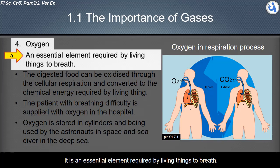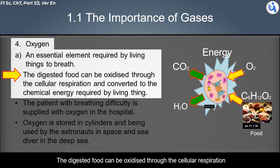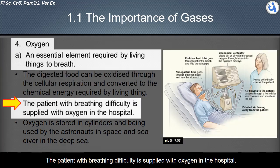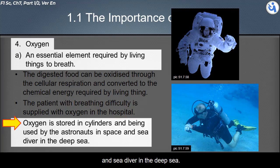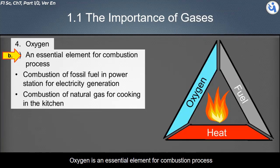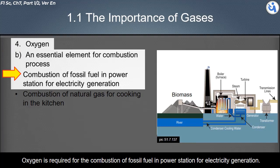About oxygen gas in the atmosphere: it is an essential element required by living things to breathe. Digested food is oxidized through cellular respiration and converted to chemical energy. Patients with breathing difficulties are supplied with oxygen in hospitals. Oxygen is stored in cylinders and used by astronauts in space and sea divers in the deep sea. Oxygen is also essential for combustion, including burning fossil fuels at power stations for electricity generation.